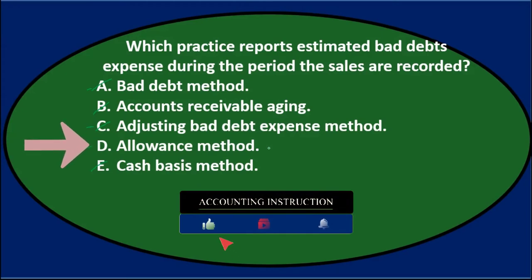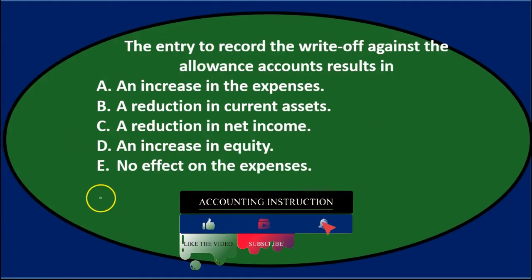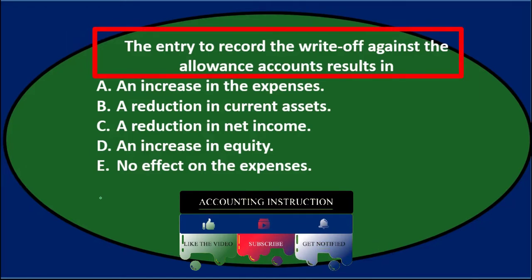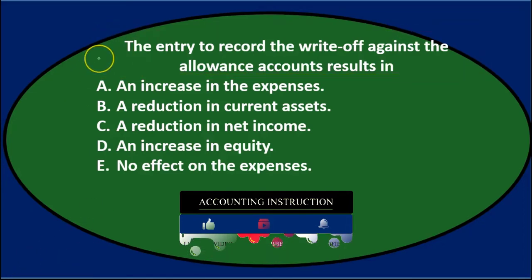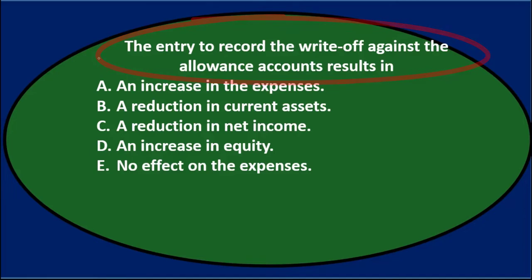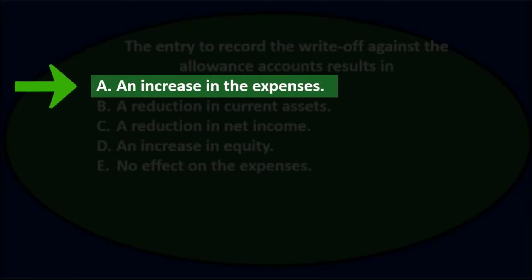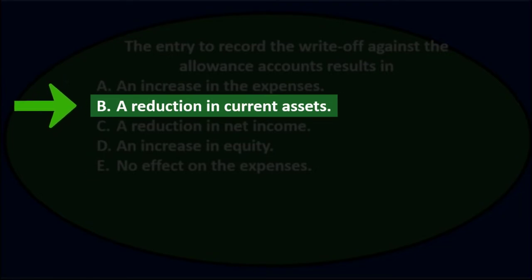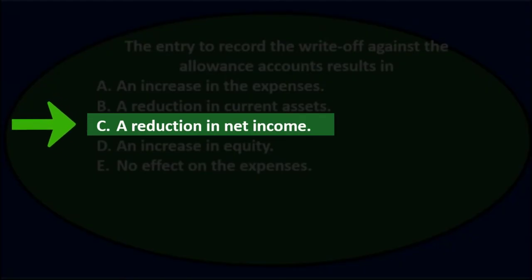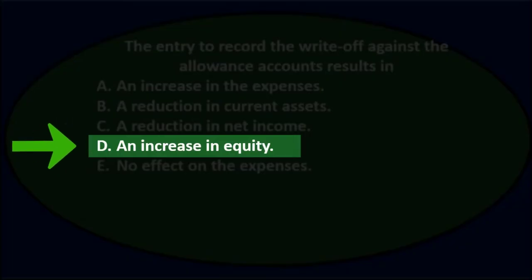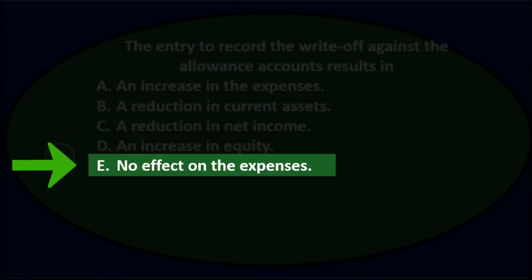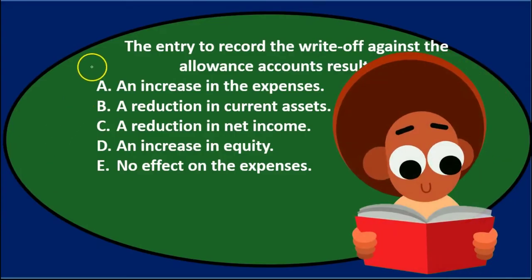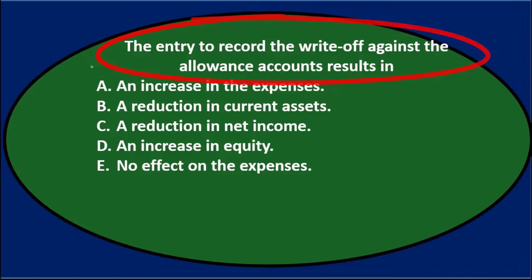Next question: the entry to record the write-off against the allowance account results in — A) an increase in expenses, B) a reduction in current assets, C) a reduction in net income, D) an increase in equity, E) no effect on expenses. Let's read through that one more time: the entry to record the write-off against the allowance account results in...